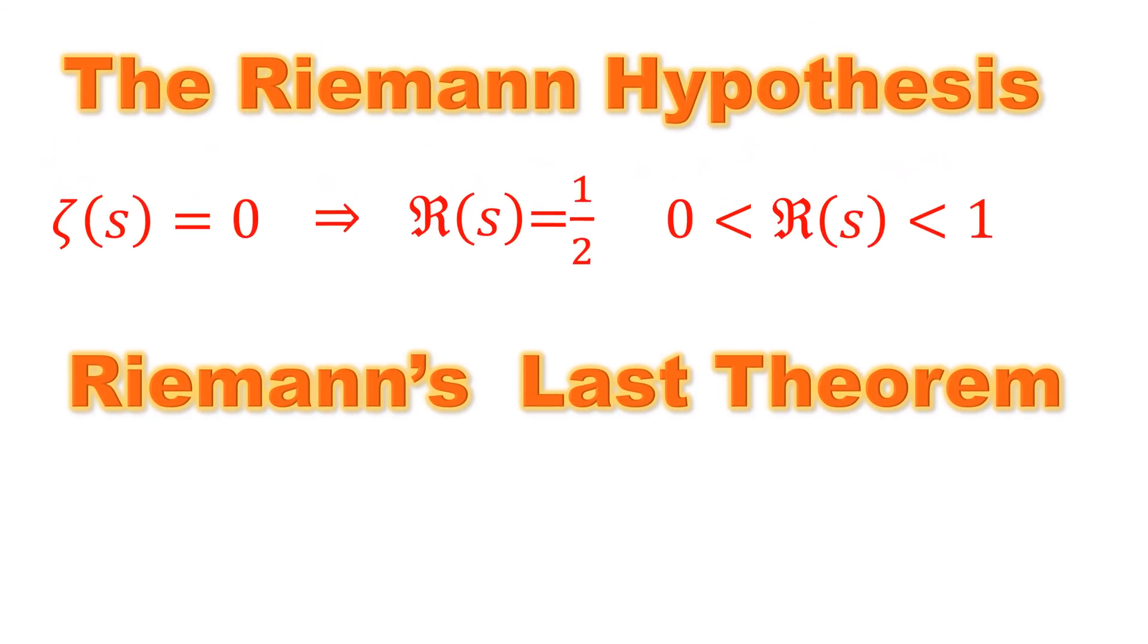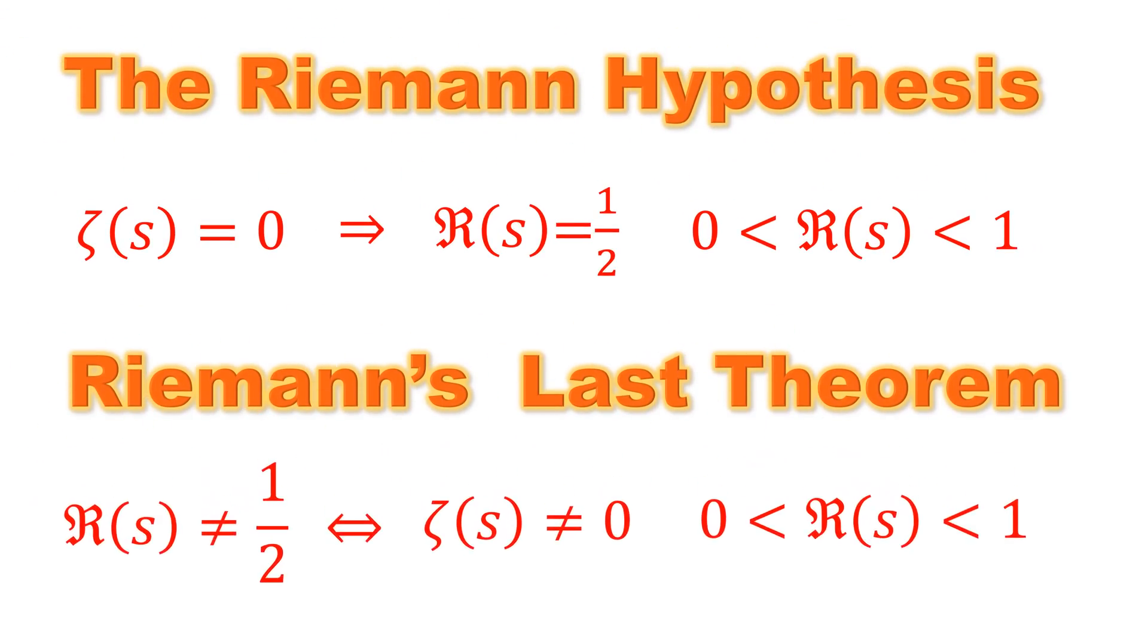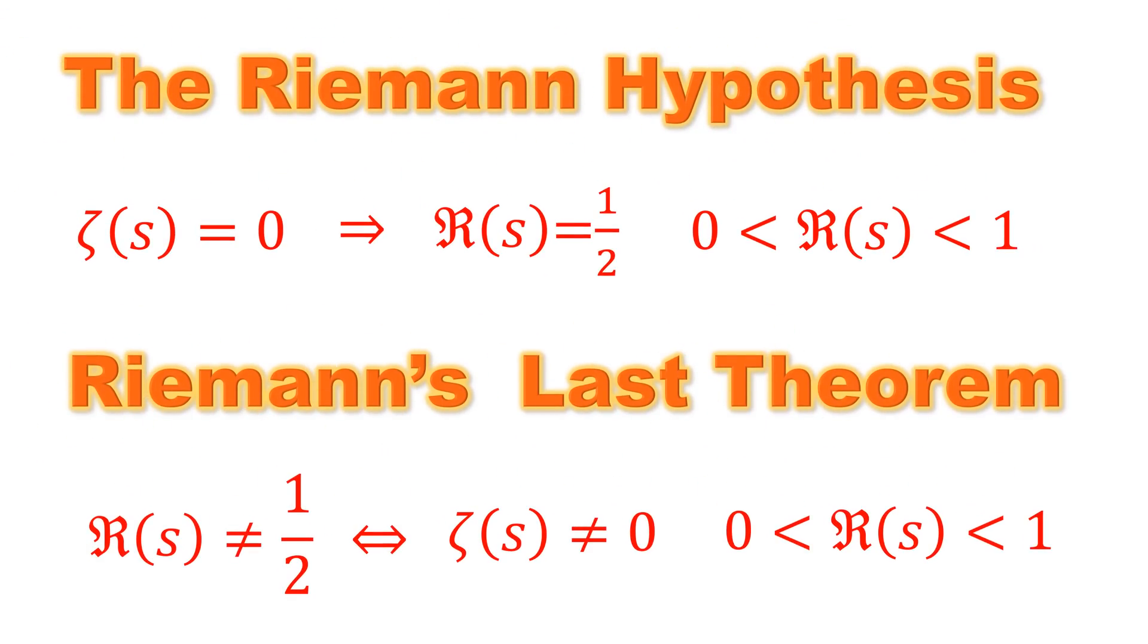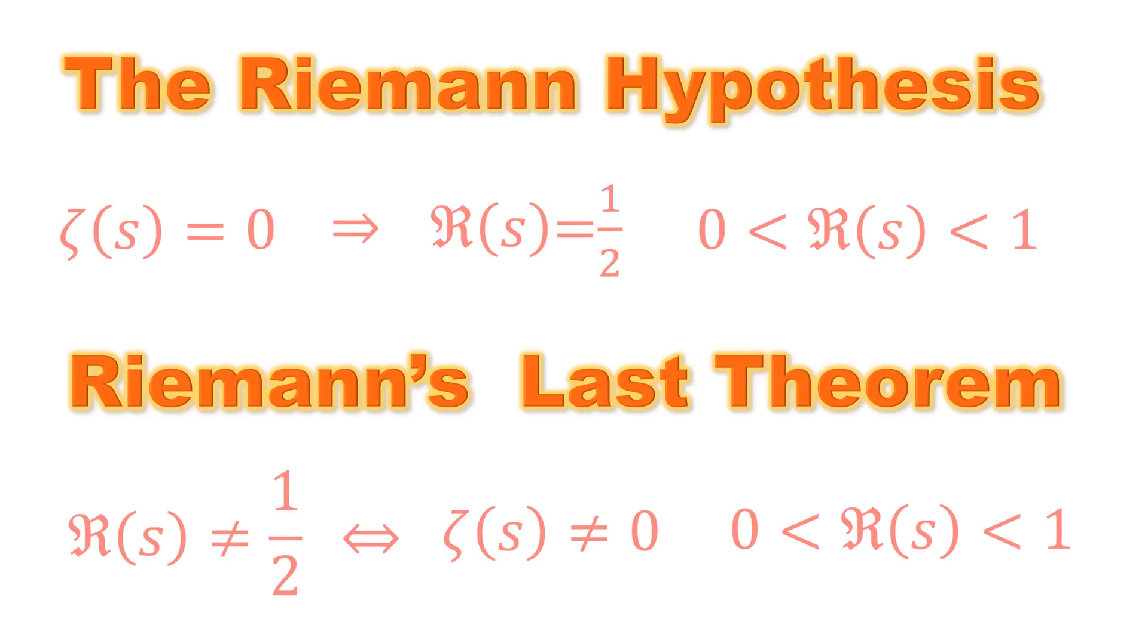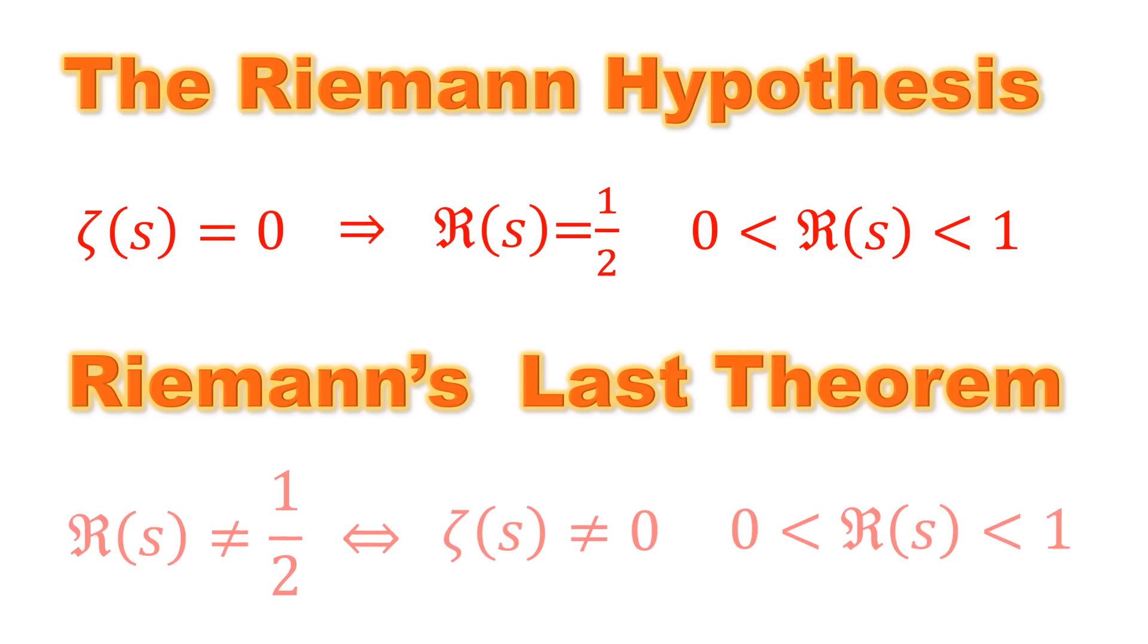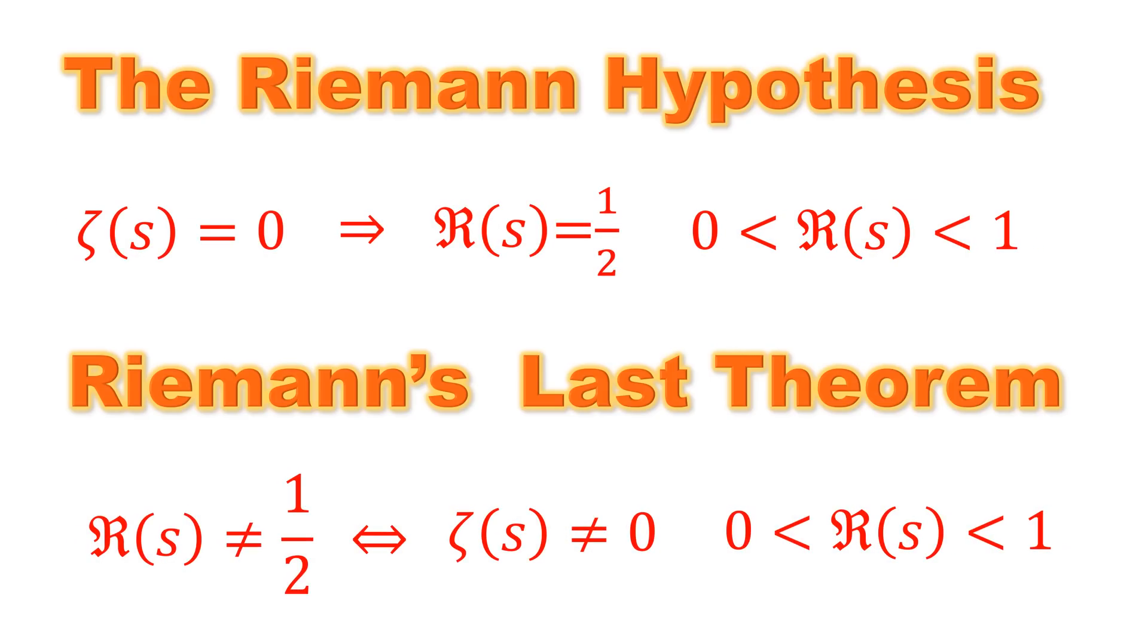This is the Riemann hypothesis, and we want to make a small change and rename it as Riemann's last theorem. Riemann's last theorem has a two-way connection, meaning that if the real part of s is not equal to one-half, the zeta function cannot be zero in this region, and vice versa.